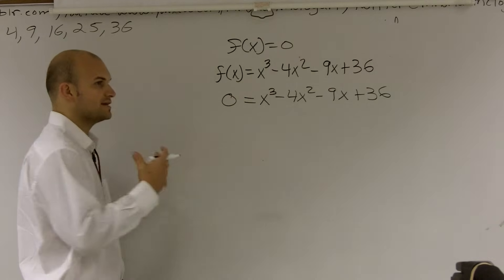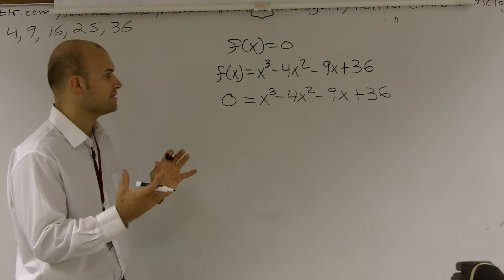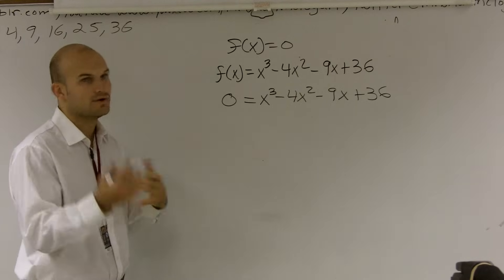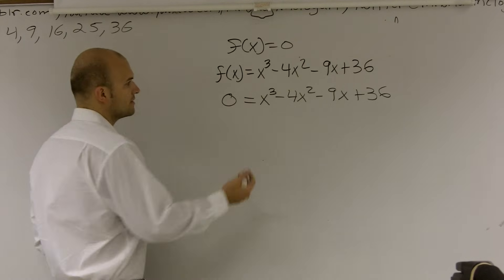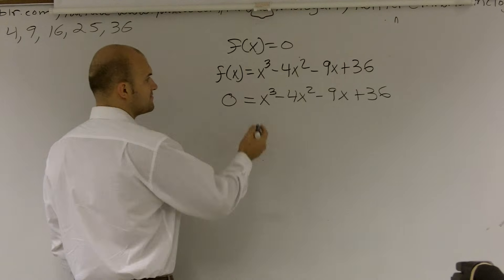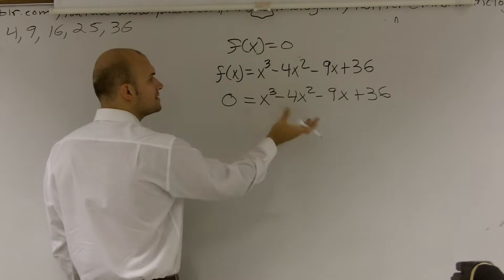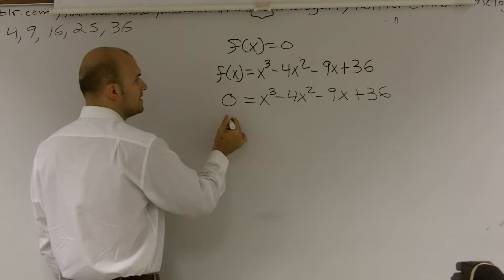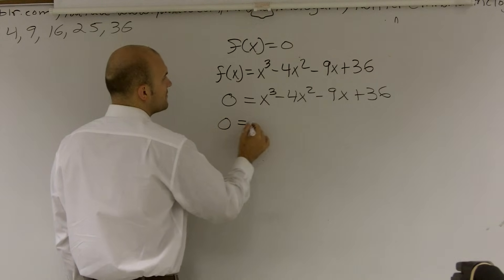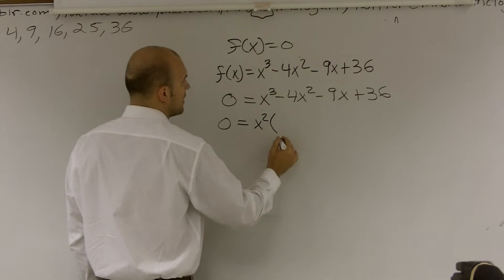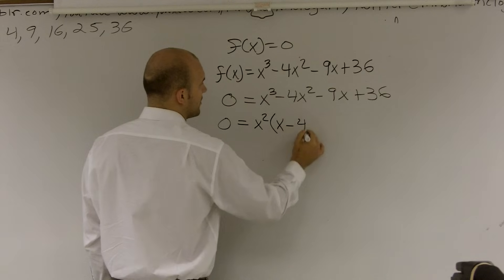So what you really just want to do is take two different terms and see if you can bring them together and if we can factor something similar out of them. So in this problem, I'm just going to look at these first two terms. Is there something that these two have in common? You can say yes, I can take out an x squared out of here. So if I factor out an x squared, I'll be left with x minus 4.